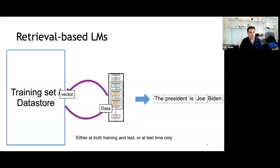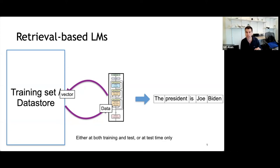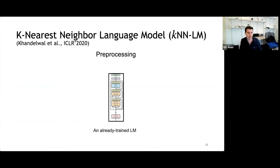This conversation with the data store can happen at training time — where the model learns how to retrieve and incorporate retrieved data — or it can be performed at test time only, taking a standard trained language model and incorporating the retrieval mechanism at test time. One prominent example of such models is the K nearest neighbor language model, also called KNNLM.